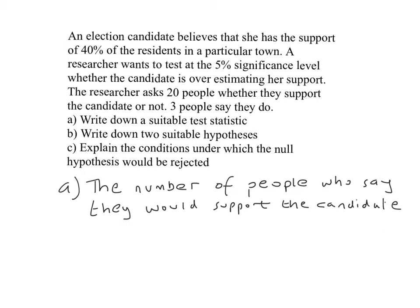Now we need two suitable hypotheses. This question is an example of a one-tailed test. The reason it's a one-tailed test is because the researcher is going to test to see whether they're overestimating the support.